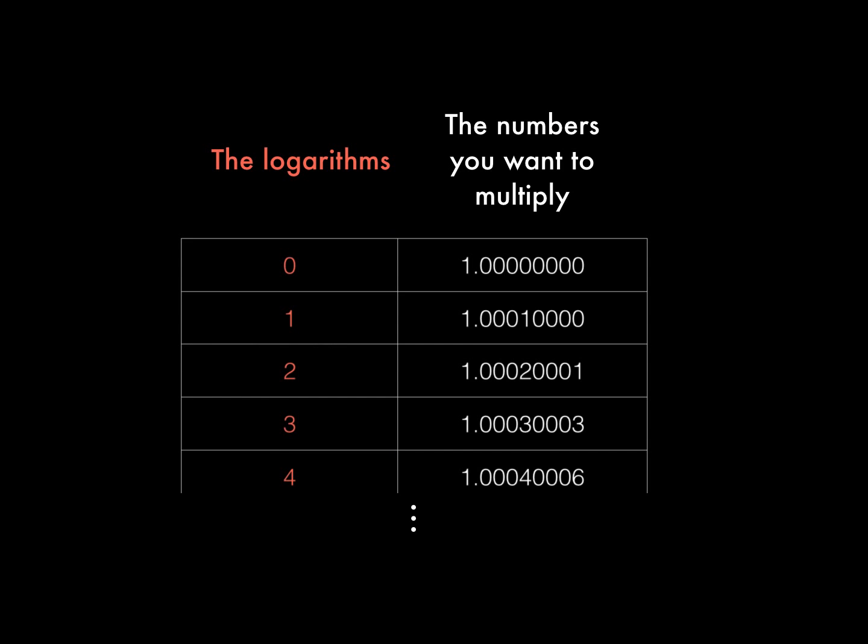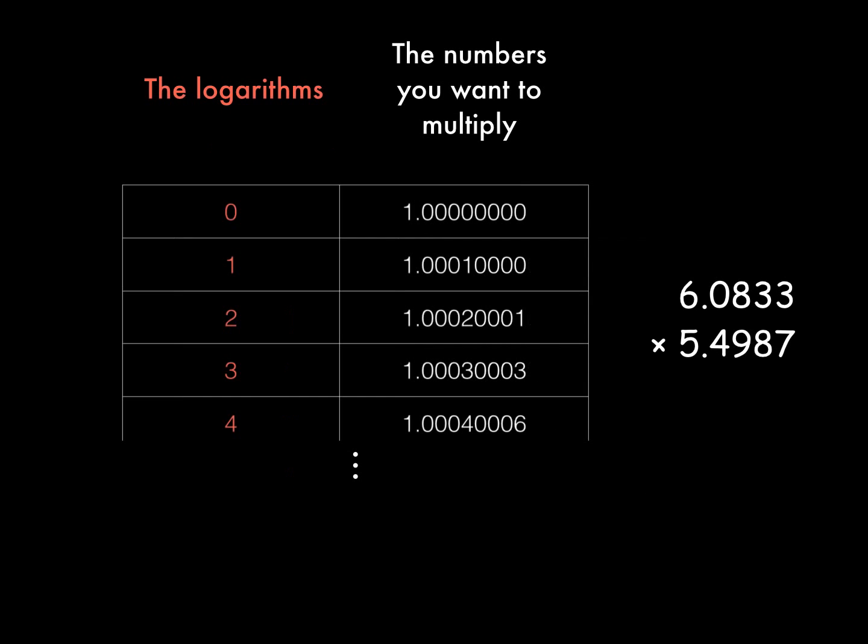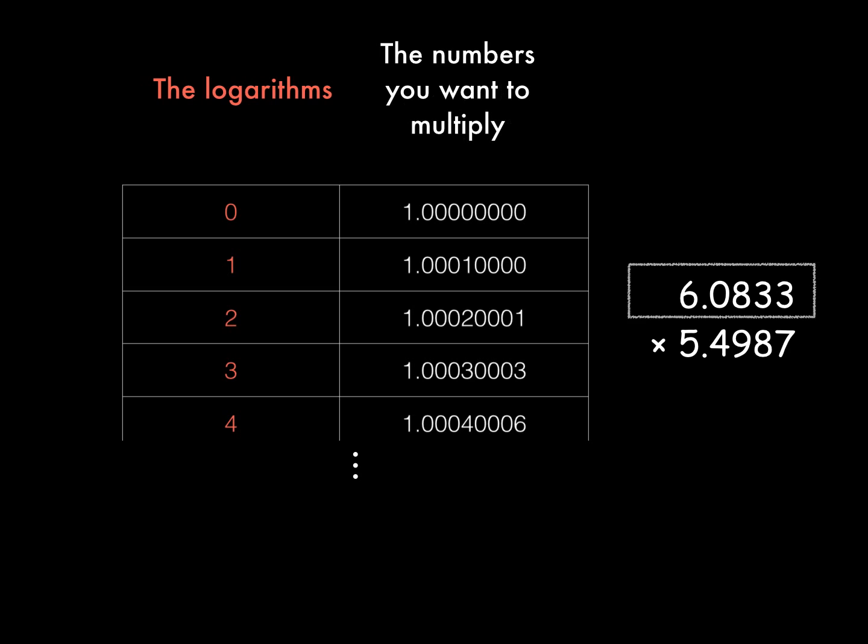So let's see if these logarithms are really any good. To keep it simple, let's pick two numbers between 1 and 10. 6.0833 times 5.4987. This works just like we did with the powers of 3.